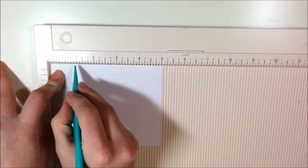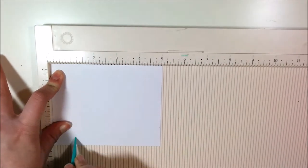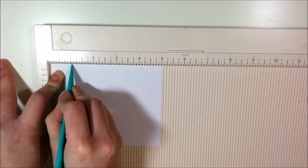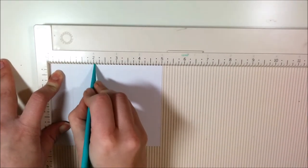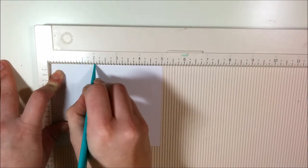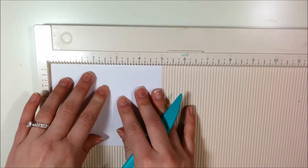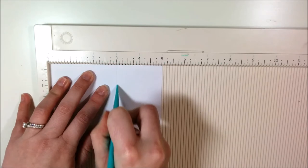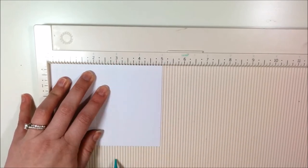And first you do all of the scoring. Put the long side up to the top of your scoreboard. And you score 1 inch, 2 inches, 3 inches, and 4 inches.